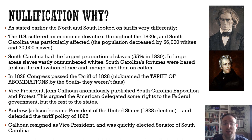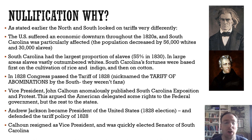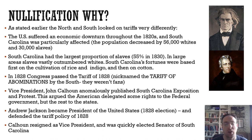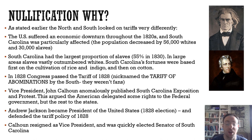In 1828, Congress passed a new tariff. The South didn't like it and called it the Tariff of Abominations — that being a nickname, not a description of what was taxed. The Vice President at the time, John Calhoun, anonymously published the South Carolina Exposition and Protest, arguing this tariff was terrible and went against the rights of individual states. He said some rights are given to the federal government and the rest to the states, and if a state doesn't like a federal law it can override it. Then Andrew Jackson became president and defended the tariff policy. Calhoun resigned and very quickly became senator of South Carolina.